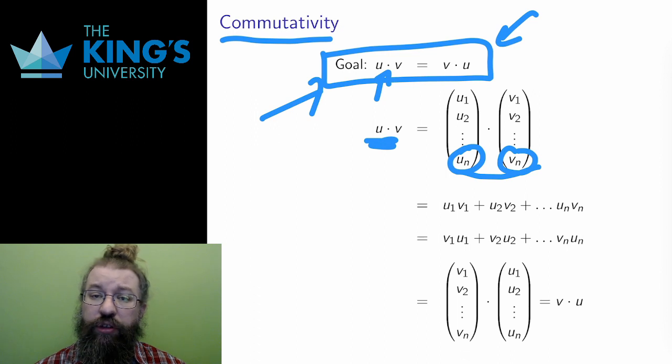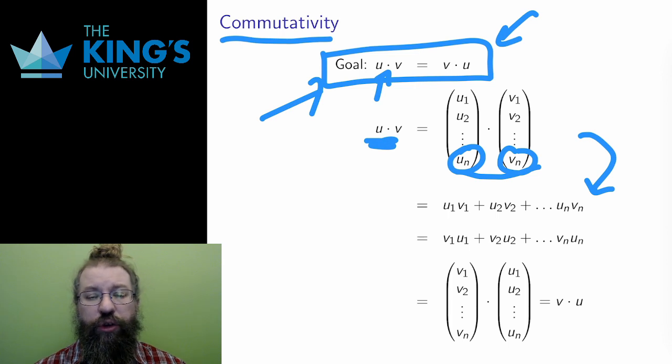Then I use the definition of the dot product and write the sum that defines it. Now, I'm trying to reverse this dot product. In this sum, all the multiplications are multiplications of real numbers. They can happen in either order. Ordinary multiplication is commutative.